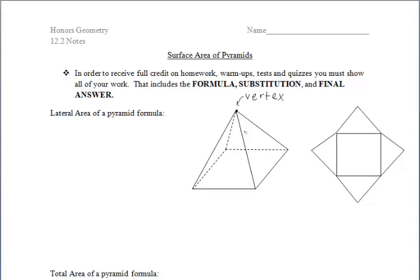I'm going to show you a shortcut on how to find the lateral area of a pyramid that's regular — one that has a regular polygon as its base. The formula we're going to derive can only be used for a regular pyramid. For a rectangular pyramid, which is not a regular pyramid, I'll do an example of that later in the notes.